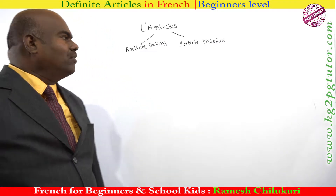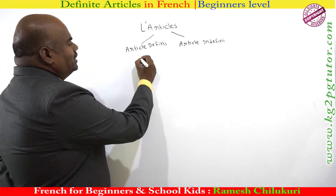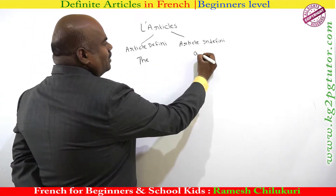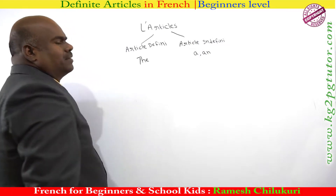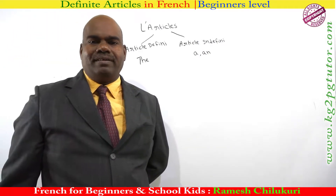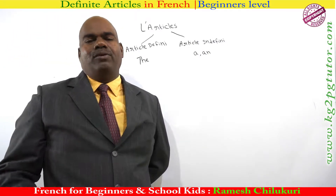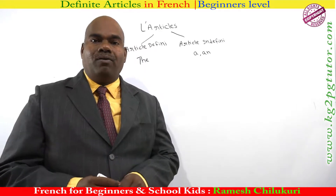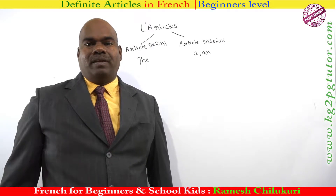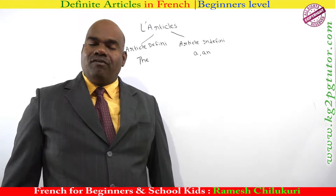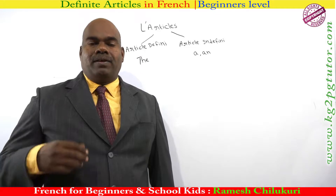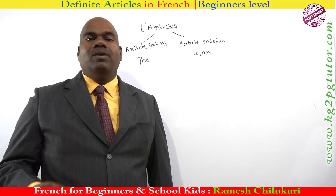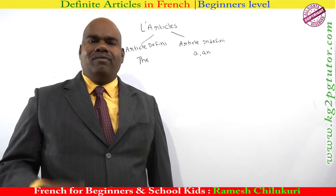In English we have only two: THE and AN. But in French you are going to have four, because in French you have a different article for the masculine form, feminine form, plural, and for words starting with vowels. All are different.